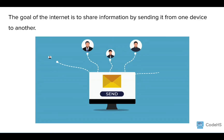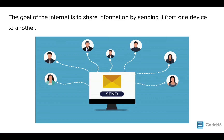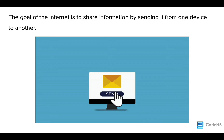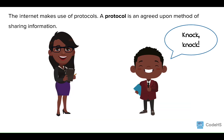The Internet has many different purposes, but to put it in general terms, the main goal of the Internet is to share information by sending it from one device to another. Everyone who uses the Internet learns how to effectively share information. The Internet uses protocols, which are agreed-upon ways of sharing information.